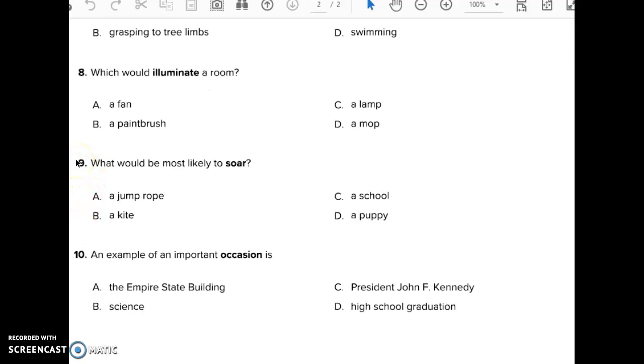Question 9. What would be most likely to soar? A: A jump rope. B: A kite. C: A school. D: A puppy.